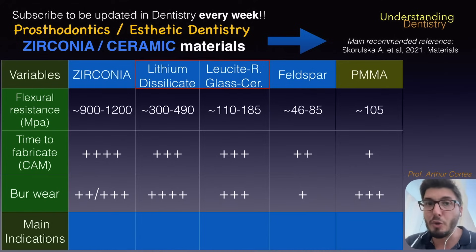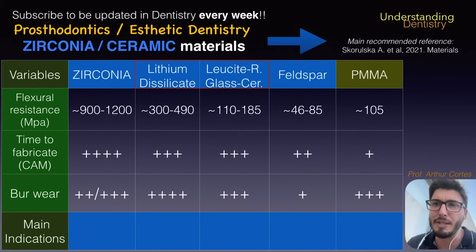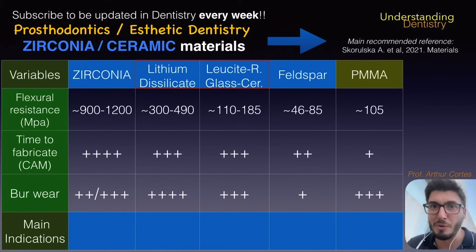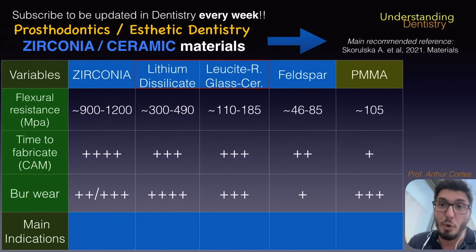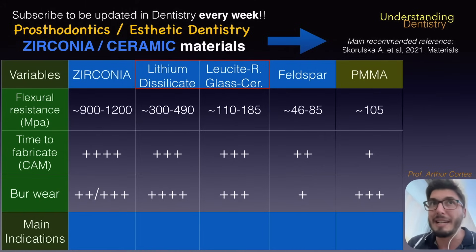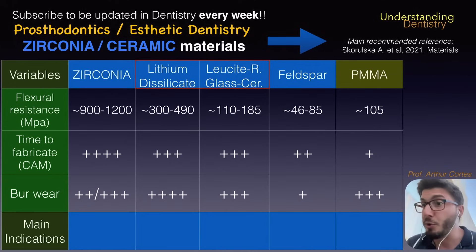This video is focused on CAD-CAM, one of the most recent technologies to produce dental prostheses, and especially on milled ceramic materials. When you look at the time to fabricate, zirconia has the longer time because we need to mill, then sinter, then polish and glaze — there are several laboratory steps to produce zirconia restorations.